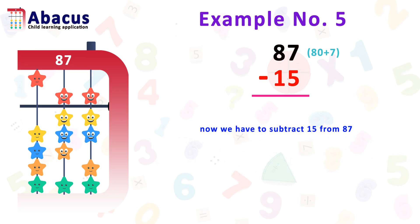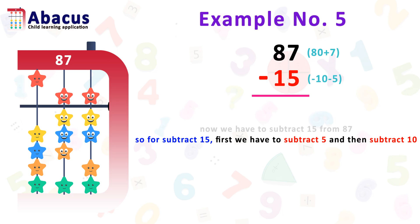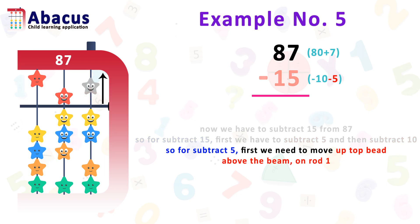Now we have to subtract 15 from 87. For subtracting 15, first we subtract 5 on rod 1, then subtract 10 on rod 2. Let's subtract 5 first: we move the top bead from the bottom to the top above the beam on rod 1, using the thumb to move the bead.